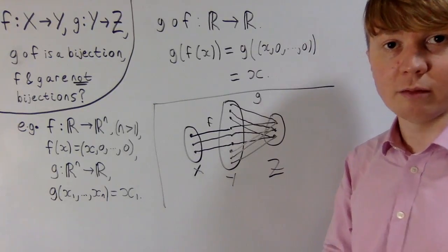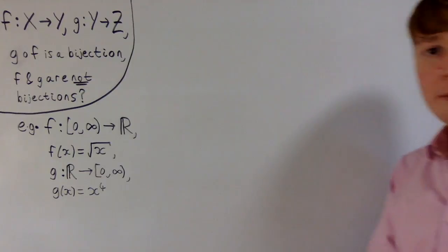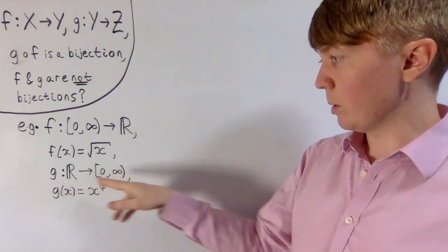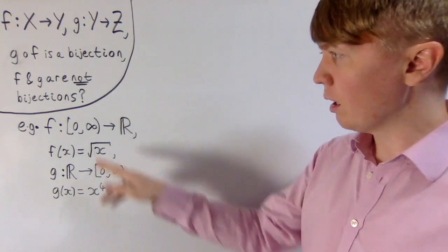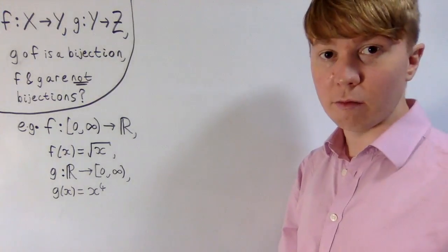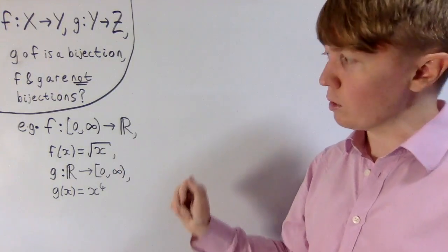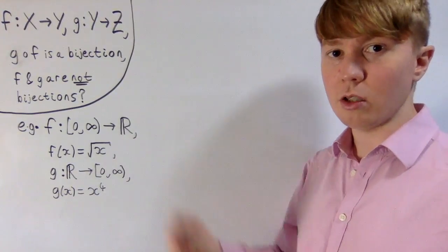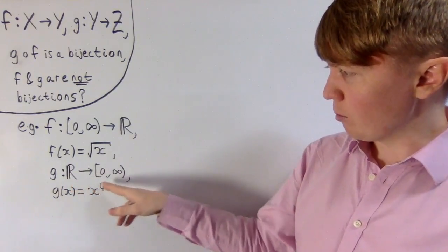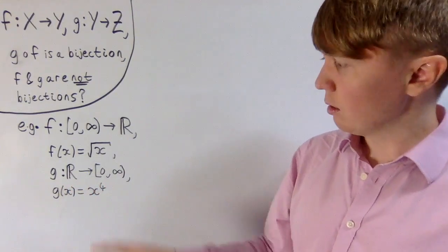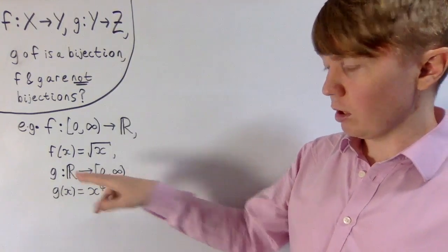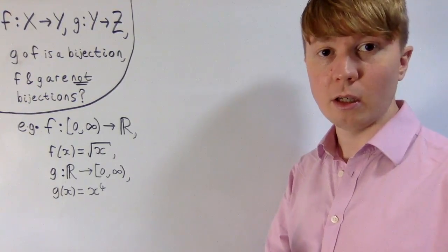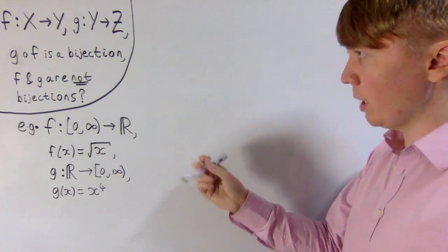In this second example, f goes from a smaller set into a slightly larger set, and g goes from the larger set back into a smaller set. Here f takes in a non-negative real number and gives its square root as output, but the codomain is all of the reals, so it doesn't fill these up — f certainly isn't a bijection because it's not onto. And g maps from the real numbers to the non-negative reals by raising a number to the power of 4. You can see that 2 and minus 2 give the same output, so g isn't one-to-one — it's certainly not a bijection.